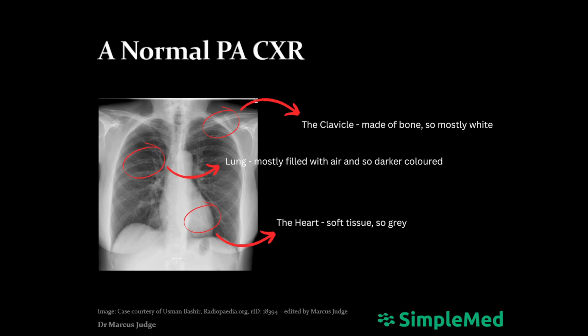Before being able to identify pathology on a chest X-ray, it is important to become comfortable with what a normal chest X-ray looks like, including the anatomical landmarks to look out for. On the screen is a normal posteroanterior chest X-ray. The landmarks highlighted are just to help you orientate yourself on the image. We will talk about a systematic approach to understanding a chest X-ray shortly. They are also a good example of the different types of densities of tissues and how they appear on a chest X-ray.